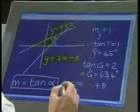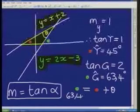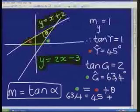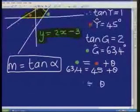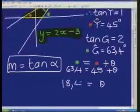Well, we know how much the green is, it's 63,4. We know how much the red is, it's 45, and so that allows us to make a conclusion about how much theta is, it's 18,4 degrees.